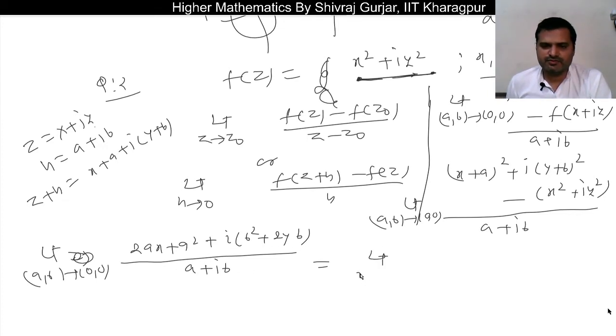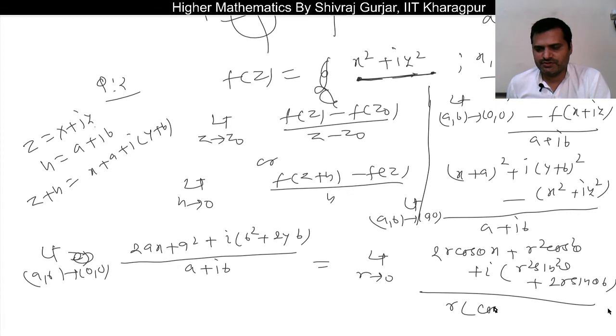Now let us convert into polar form, so r tends to 0. We have 2ax plus a² plus i(b² + 2yb) divided by a + ib. Let a = r cos θ, b = r sin θ. So this becomes: limit r tends to 0, [2r cos θ · x + r² cos² θ + i(r² sin² θ + 2r sin θ · y)]/(r cos θ + ir sin θ). Simple.